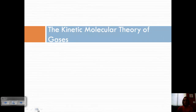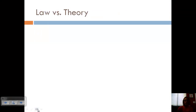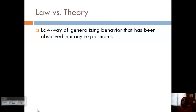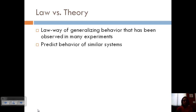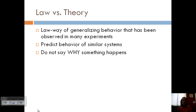Today we're going to talk about the kinetic molecular theory of gases. Let's review the difference between a law and a theory. A law is a way of generalizing behavior that's been observed in many experiments. You'd have to do a lot of experiments and get the same general result, and then we use this to predict behavior of similar systems. The only thing with a law is that it doesn't say why something happens — it just says this is what's going to happen, but it doesn't explain why.